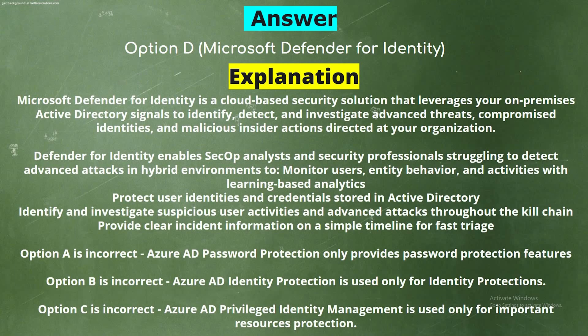The correct answer is Option D, Microsoft Defender for Identity. Explanation: Microsoft Defender for Identity is a cloud-based security solution that leverages your on-premises Active Directory signals to identify, detect, and investigate advanced threats, compromised identities, and malicious insider actions. Defender for Identity enables security analysts to monitor users, entity behavior, and activities with learning-based analytics, protect user identities and credentials stored in Active Directory, identify and investigate suspicious user activities, and provide clear incident information on a simple timeline.